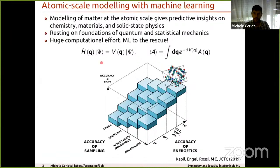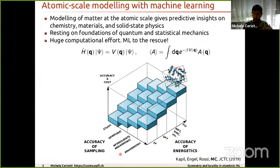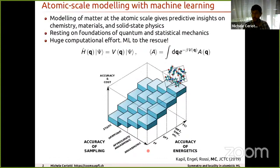In practice, the combined need for accurate energy evaluations of individual configurations and fully converged statistical sampling of a thermodynamic ensemble turns this problem into a nightmare. You need highly accurate quantum calculations — each property evaluation is very costly — and you need hundreds of millions of energy and force evaluations for converged sampling.